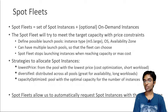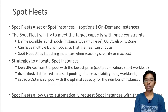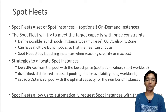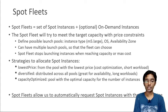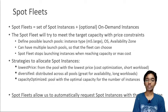A spot fleet is the ultimate way to save money. It allows you to get a set of spot instances and optionally on-demand instances. The spot fleet will try its best to meet the target capacity within the price constraints you define. It launches from multiple launch pools — different instance types, different OS, different availability zones — and you define multiple launch pools so the fleet can choose the best and most appropriate one. When the fleet reaches your budget or target capacity, it stops launching instances.